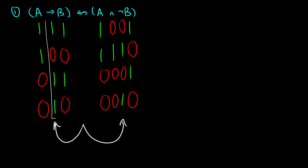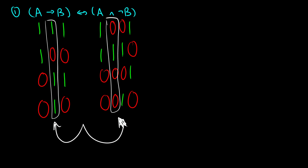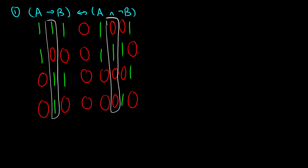I'll highlight these in boxes so we can see which numbers we're taking from more clearly. In the first row we have 1, 0 — values are different. Second row: 0, 1 — different. Third row: 1, 0 — different. Fourth row: 1, 0 — different. So we filled out that truth table, and in this final column they're all zeros.